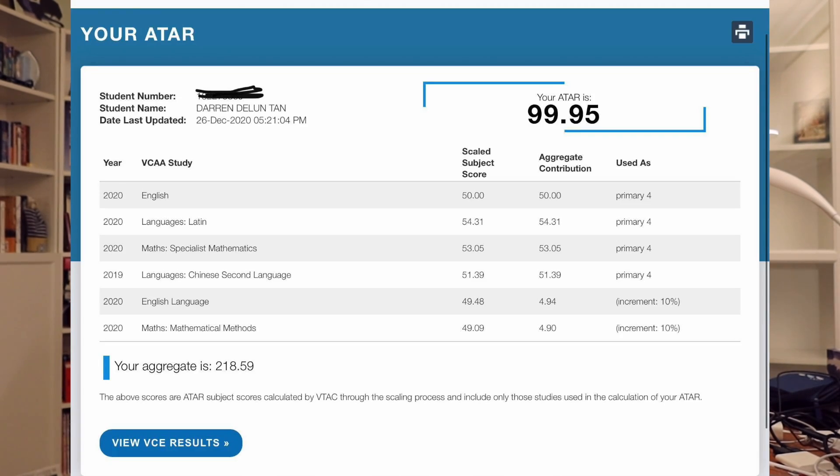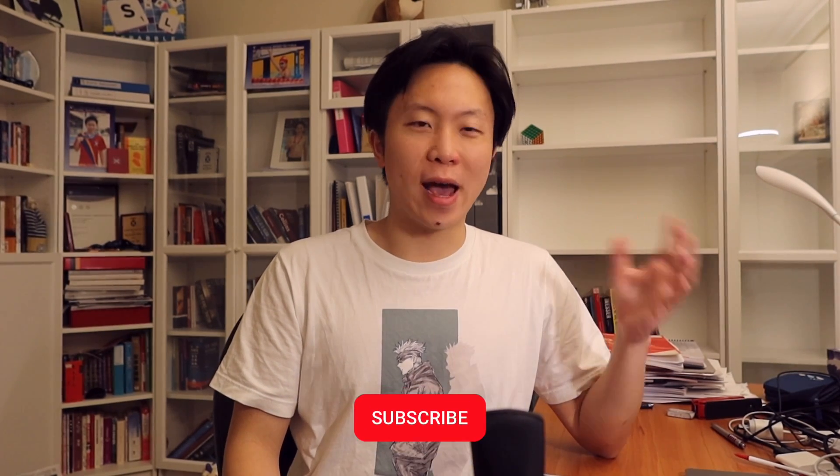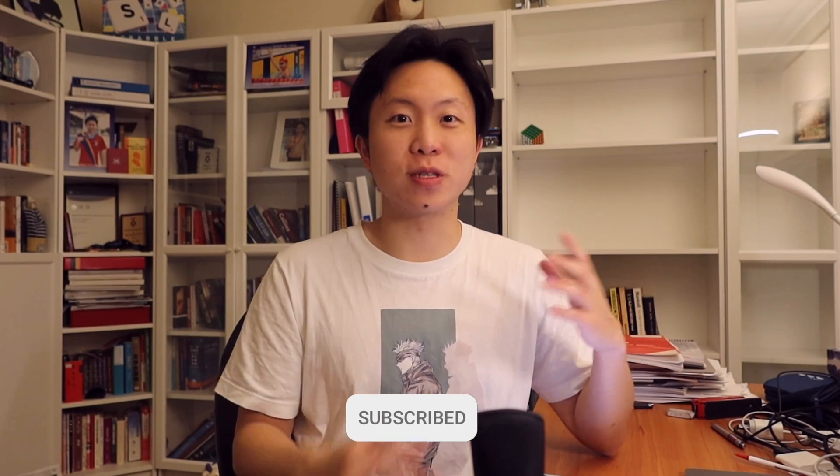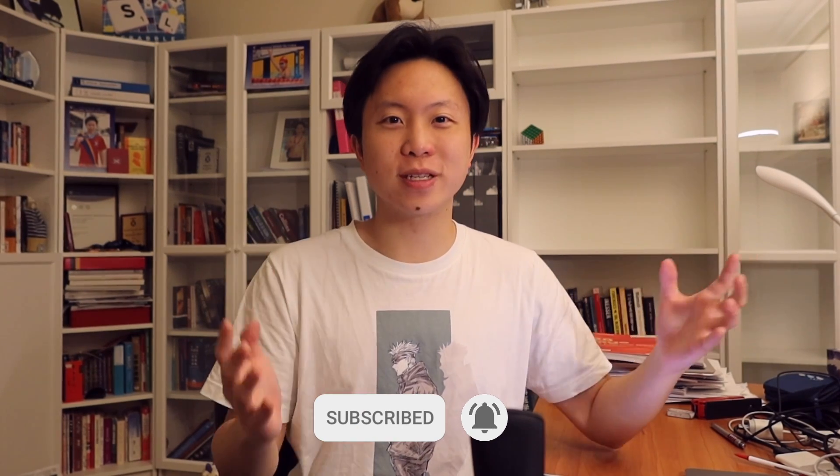With VCE I graduated in 2020 with an ATAR of 99.95. With maths, my Specialist Maths score was 44 in year 12, and Methods I sat twice in year 11 and year 12, and I obtained a score of 46 both years. A bit of an interesting story - if you check out some of my other videos you'll see the reasoning and all the stories behind that.